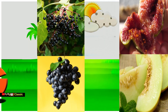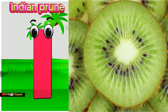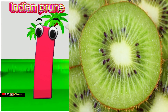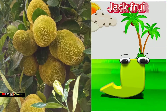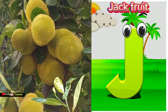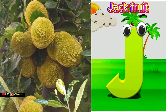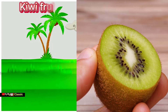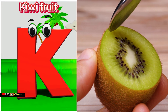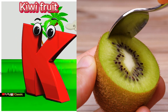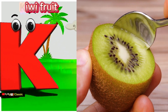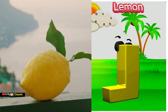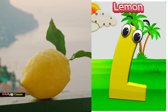I is for Indian prune, i-i-Indian prune. J is for jackfruit, j-j-jackfruit. K is for kiwifruit, k-k-kiwifruit. L is for lemon, l-l-lemon.